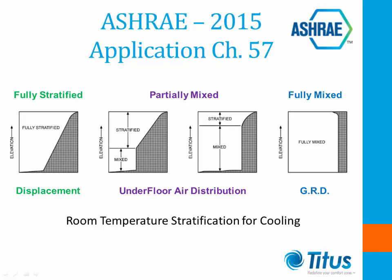The middle two diagrams show stratification for a partially mixed underfloor air distribution system, where the occupied area above the floor is mixed and the upper level is stratified for energy savings. For the diagram on the middle left, the primary jet is projected to a height of less than four and a half feet above the floor, and for the center right, the plume exceeds the four and a half foot height. The far right shows a more traditional fully mixed system using ceiling or sidewall mounted grills and diffusers. Fully mixed systems are usually more flexible, but could be less energy efficient.